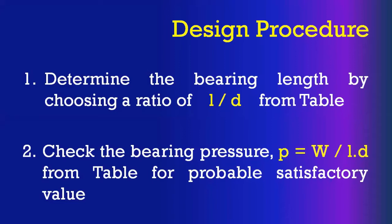The second step is to check the bearing pressure. The bearing pressure equation is: P = bearing load divided by projected area (L × D). Check this bearing pressure value against the tabular value to see whether the selected L/D ratio satisfies the design considerations as far as bearing pressure is concerned. From the L/D ratio, you calculate the length of the bearing. Once you have the length and diameter, you can find the bearing pressure since the bearing load is given.